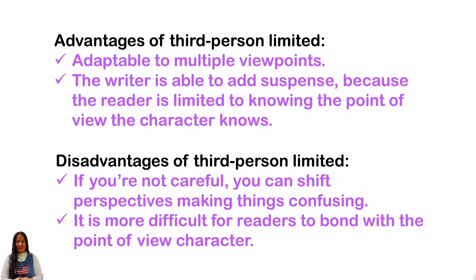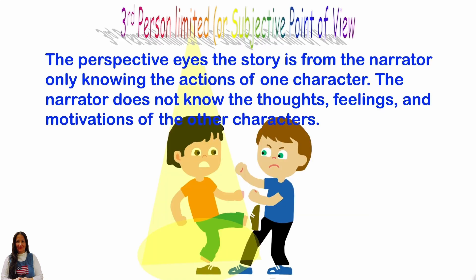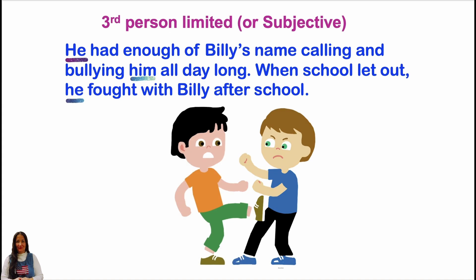It is more difficult for the reader to bond with the point of view character. Third person limited, or subjective point of view: the perspective eyes of the story is from the narrator, only knowing the actions of one character. The narrator does not know the thoughts, feelings, and motivations of other characters. Example: 'He had enough of Billy's name-calling and bullying him all day long. When school let out, he fought with Billy after school.' Look for pronouns: he, him.